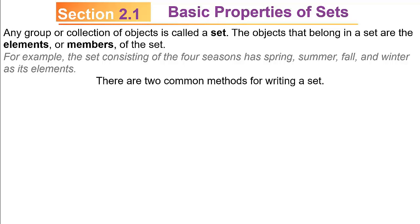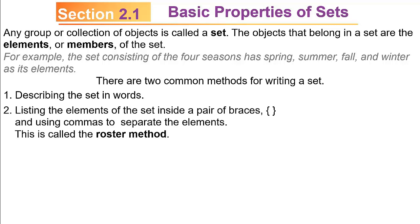There are two common methods for writing sets. The first method is just describing the set in words. The second method is listing the elements of the set inside a pair of braces and using commas to separate the elements, and this is called the roster method. There's a third method that we'll talk about later, but these are the ones we'll start off with.